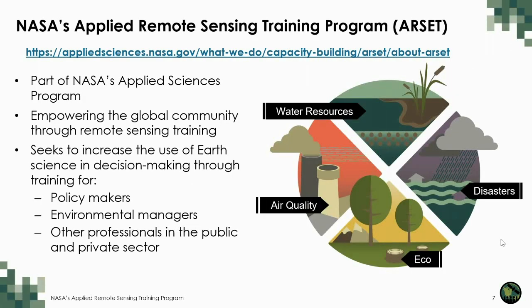For those unfamiliar with the RSET program, we're part of NASA's Capacity Building Program under Applied Sciences, designed to empower the global community through remote sensing training. We have training topics within four application areas: air quality, water resources, disasters, and eco-forecasting, which is where the RSET team resides. Our training levels range from introductory to advanced, and this series is on the introductory level. Our trainings are designed for professionals with natural resource management agencies, policymakers, and other environmental decision makers.